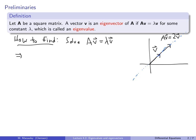I'm going to move everything onto one side of the equation: AV minus Lambda V equals the zero vector. Now I want to factor out V, but I have to be careful — I cannot just write (A minus Lambda) times V, because A is a matrix and Lambda is a scalar. You can't take a 2×2 matrix and subtract a number from it — that does not make sense at all.